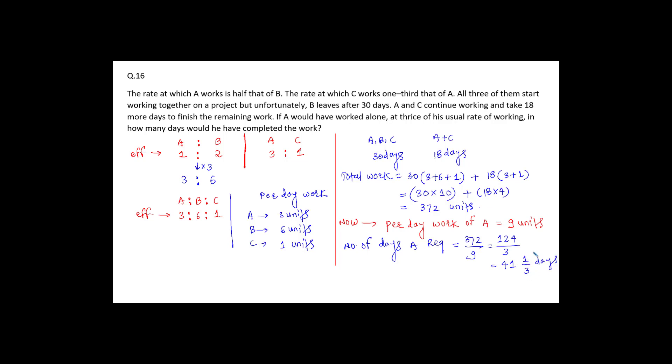So if A works alone with the thrice of his efficiency, A can complete the total work in how many days? 41 and 1 by 3 days. This is how we can solve this question.